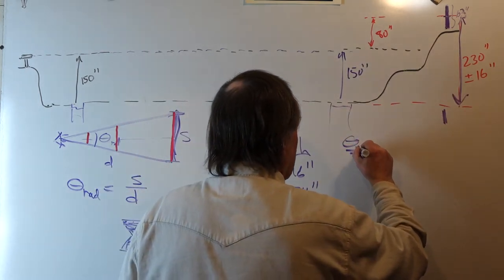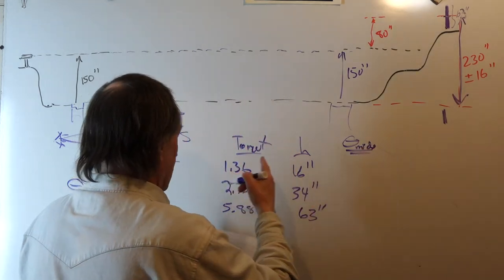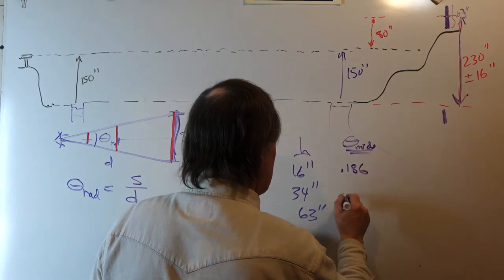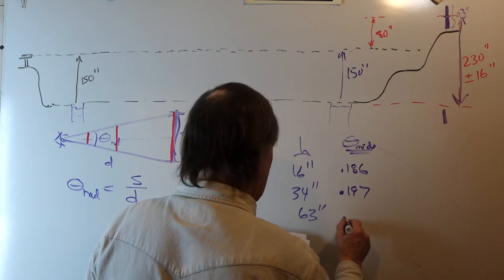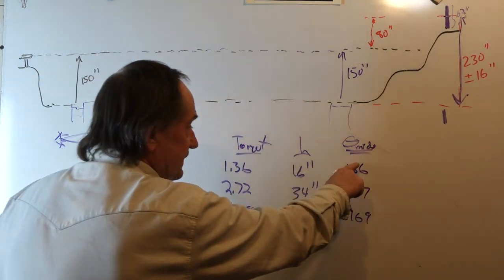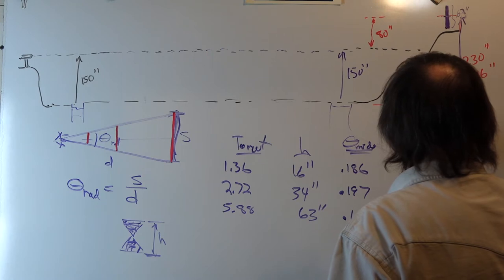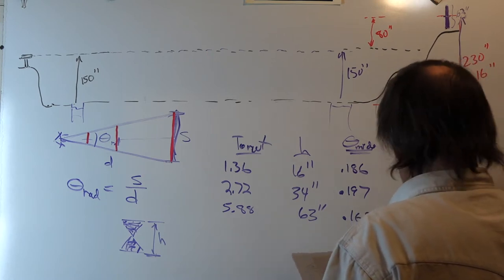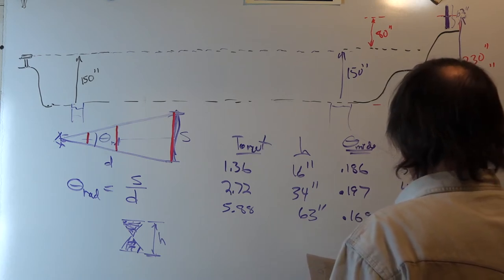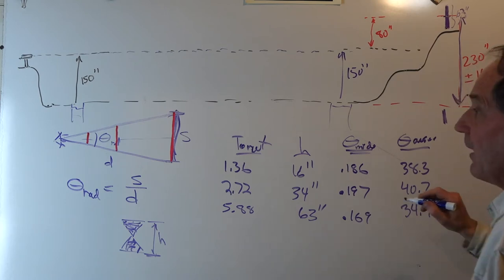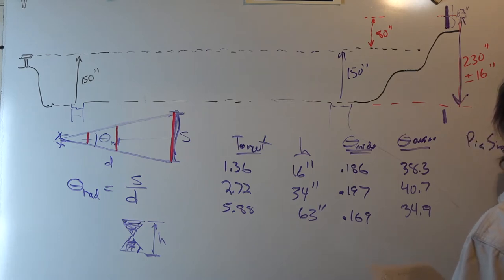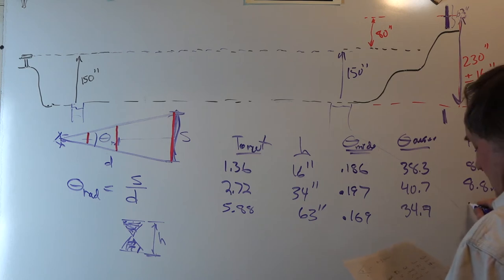Now, theta in milliradians for the three targets is 0.186, 0.197, and 0.169. Now, if it was exactly proportioned, these numbers would all be the same, but they're slightly different. And if I put theta in terms of arc seconds, then this is 38.3, this is 40.7, and this is 34.9. And measuring on this photograph that I just showed you, the picture size in millimeters is 8.0 millimeters, 8.8 millimeters, and 7.0 millimeters.